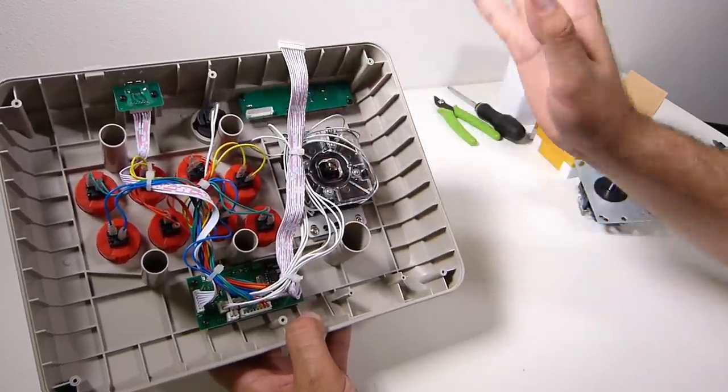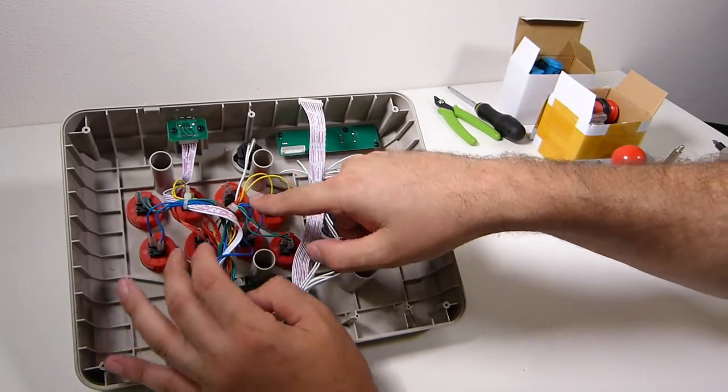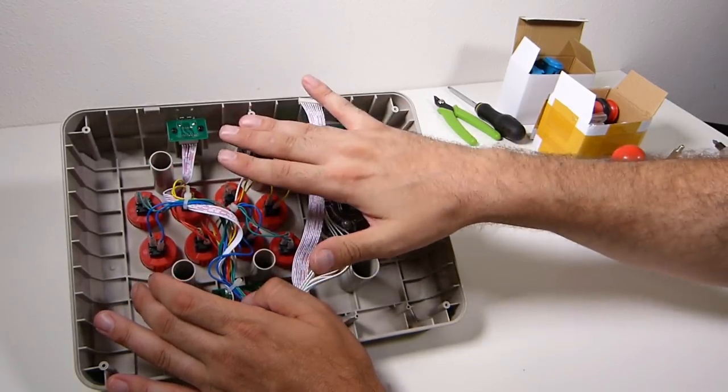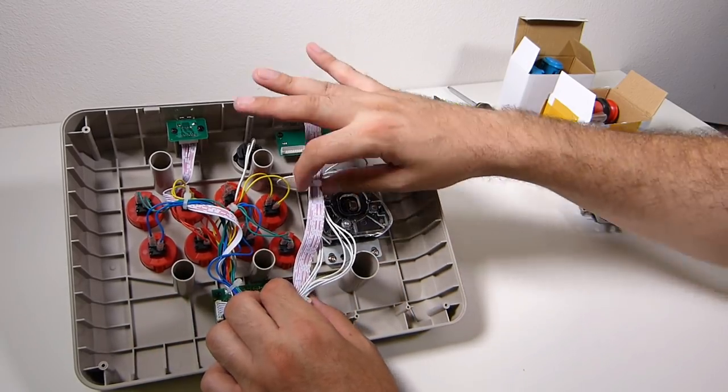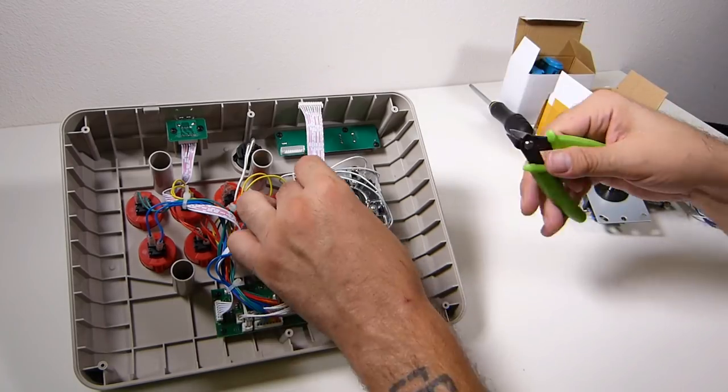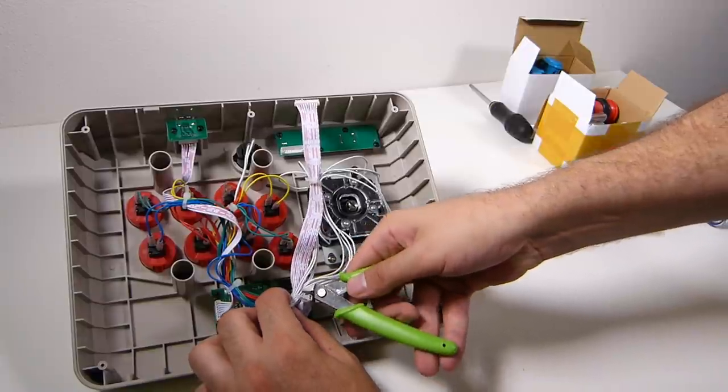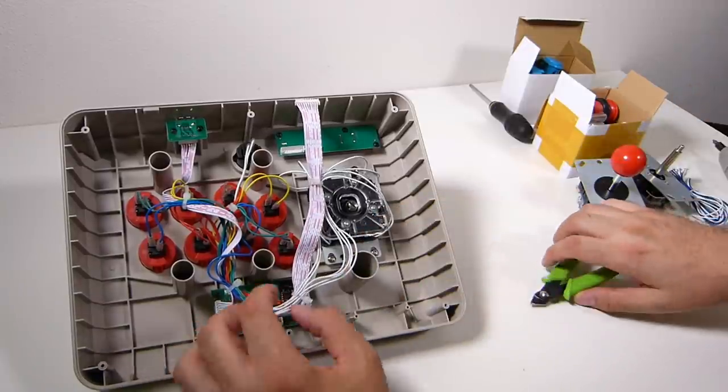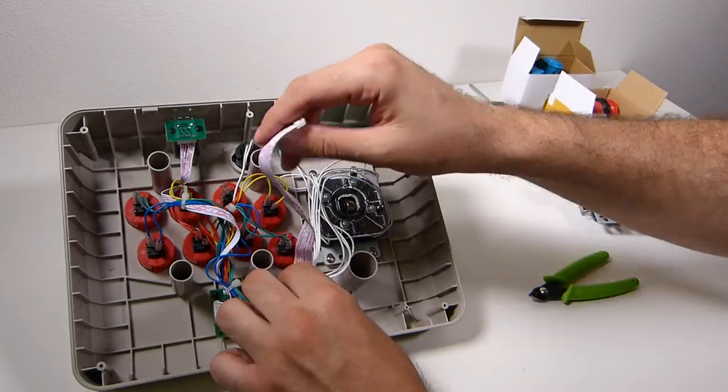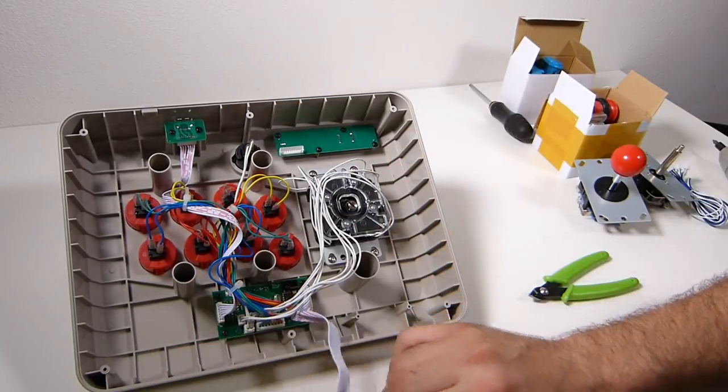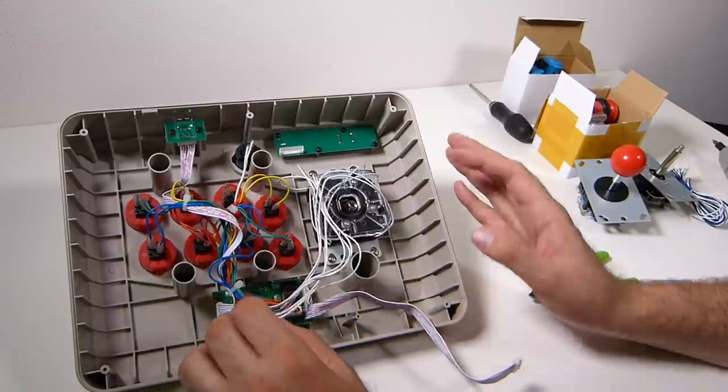We have our encoder down here. Up top is going to be the Bluetooth board. And then over here is our USB for power charging, and the battery is underneath the encoder. So what I like to do is remove the Bluetooth, just so that the controller's not constantly trying to turn on if I'm messing with things.